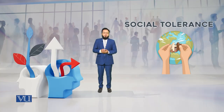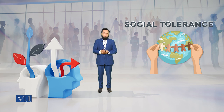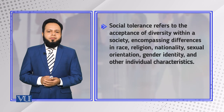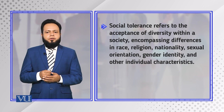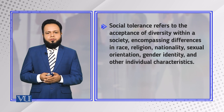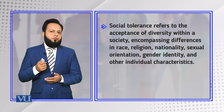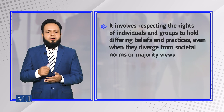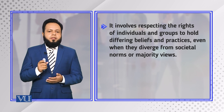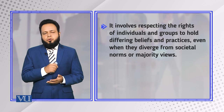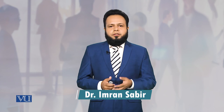In this module we are going to talk about social tolerance. Social tolerance refers to the acceptance of diversity within a society, encompassing differences in race, religion, nationality, sexual orientation, gender identity, and other individual characteristics. It involves respecting the rights of individuals and groups to hold different beliefs and practices, even when they diverge from societal norms or majority views. There are a lot of ideological differences where people cannot necessarily agree upon shared beliefs and value systems.